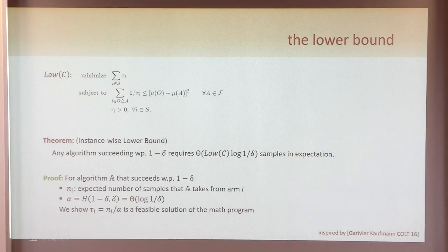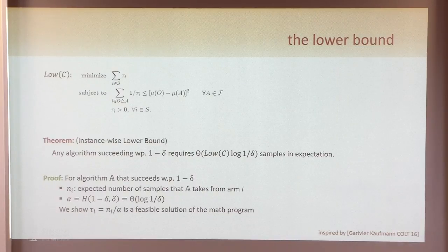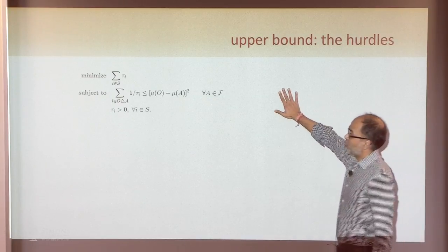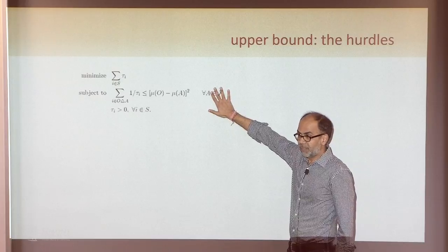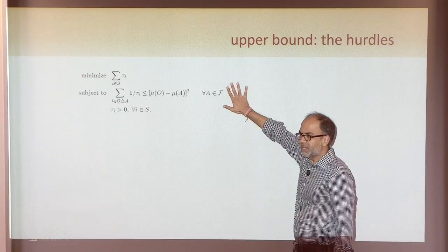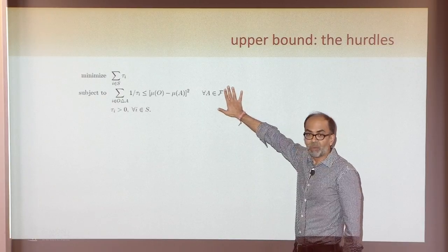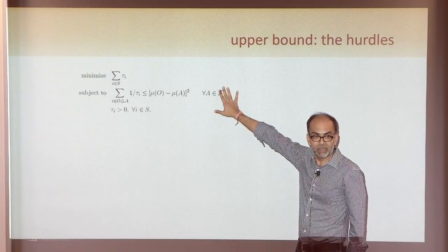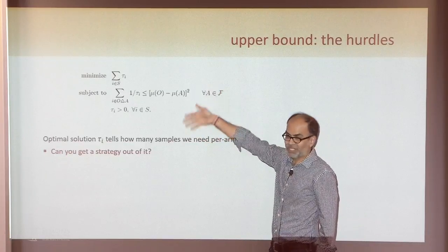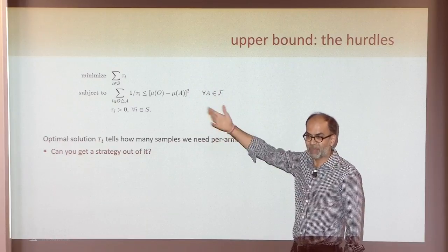The argument is a change of distribution argument — what happens if I change the means of this set of arms from one value to another? Once you write this lemma — if you can solve this convex program — you have a lower bound on the number of samples needed. The challenge is to get an upper bound which matches this lower bound up to some fudge factors.